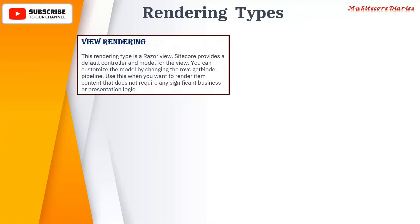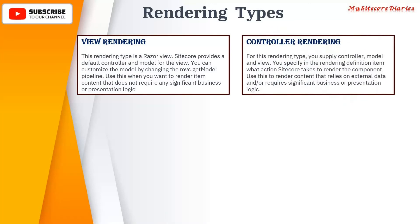There are two major rendering types. First is the View Rendering and second is the Controller Rendering. View Rendering is a Razor view — basically it is a view only. Sitecore provides a default controller and model for the view. You can customize the model by changing the MVC GetModel pipeline. Use this when you want to render content that does not require any significant business or presentation logic.